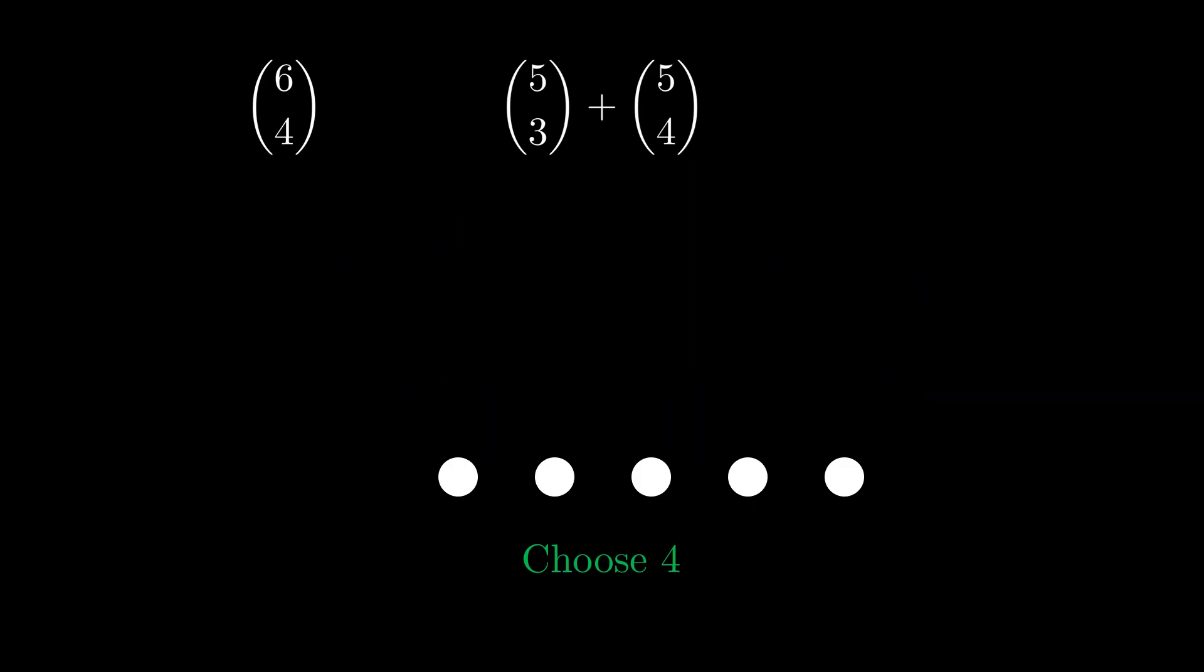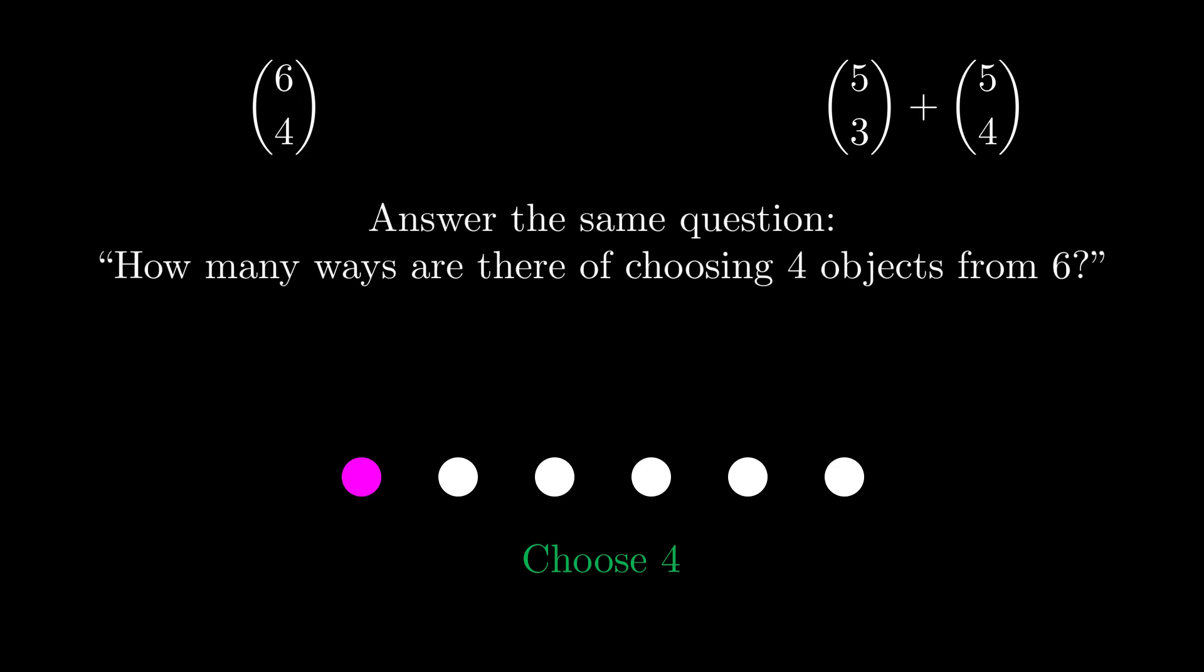And for every selection of 4 objects from 6, I either have that pink one or I don't. And so actually, these two numbers, they answer the same question, which is how many ways are there of choosing 4 objects from 6? It's just that the one on the left just does so without caring about anything. The one on the right cares about whether I've chosen the pink one or not. But really, it doesn't change anything. It doesn't matter whether I care about the pink one or not. They must be equal. It's two ways of answering the same question, and so they must be equal.